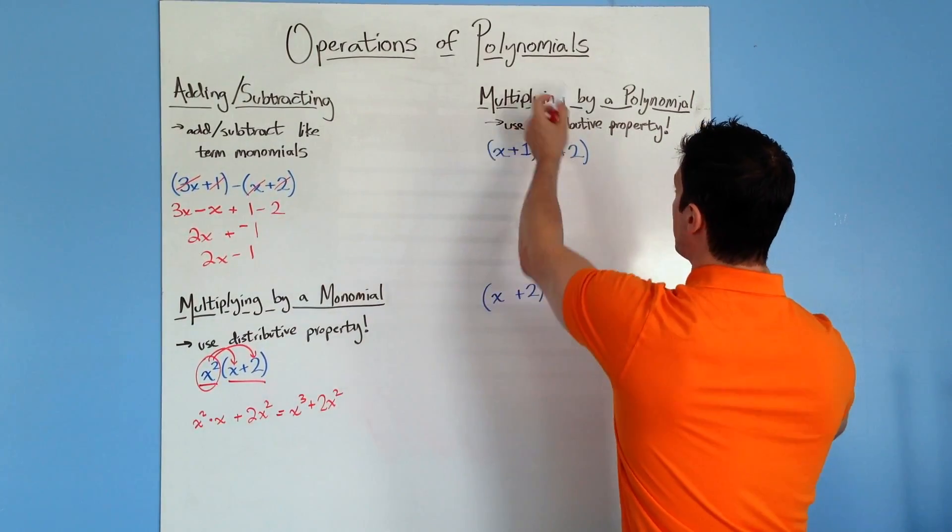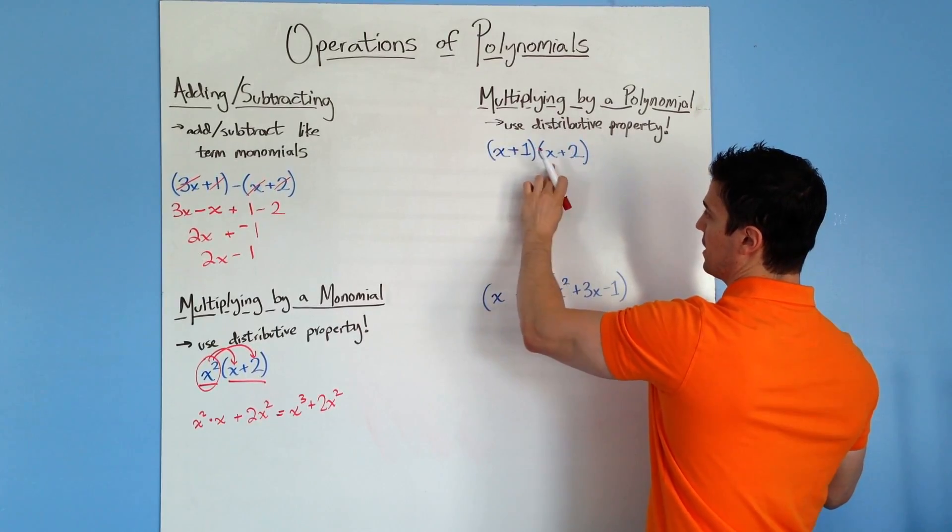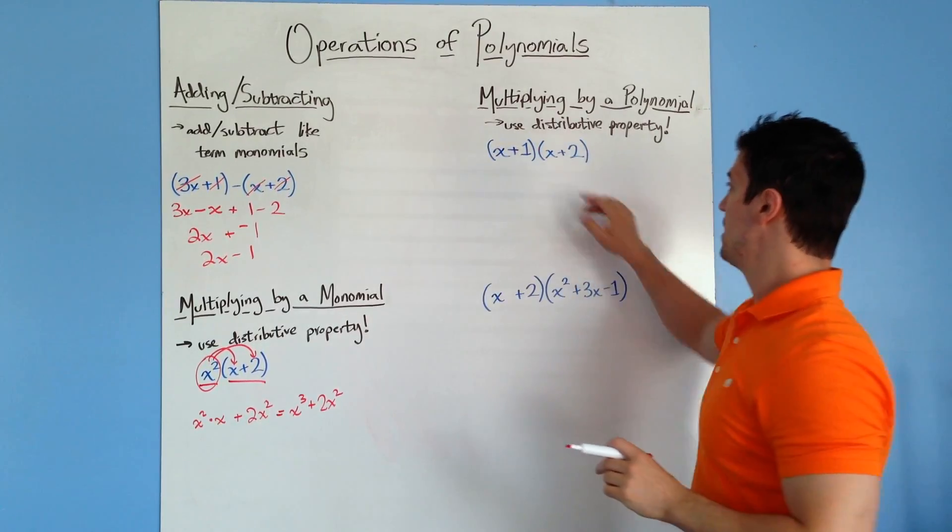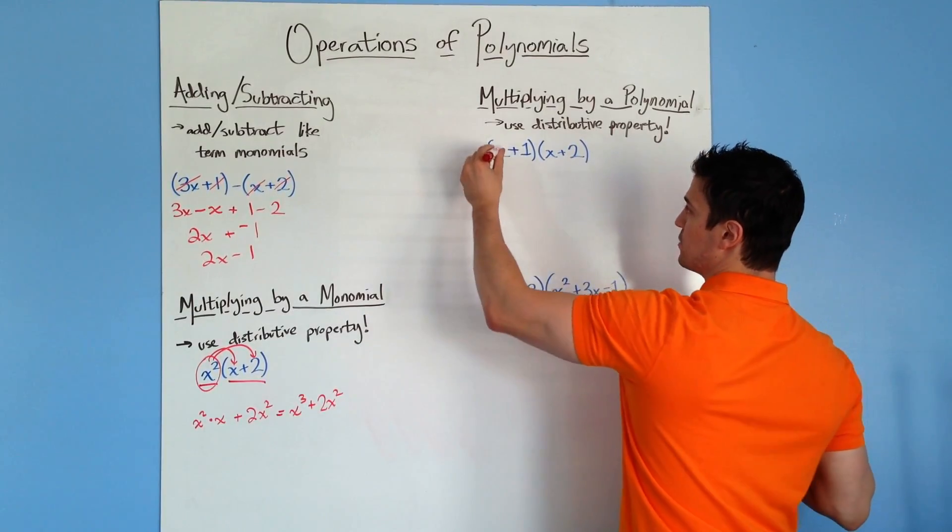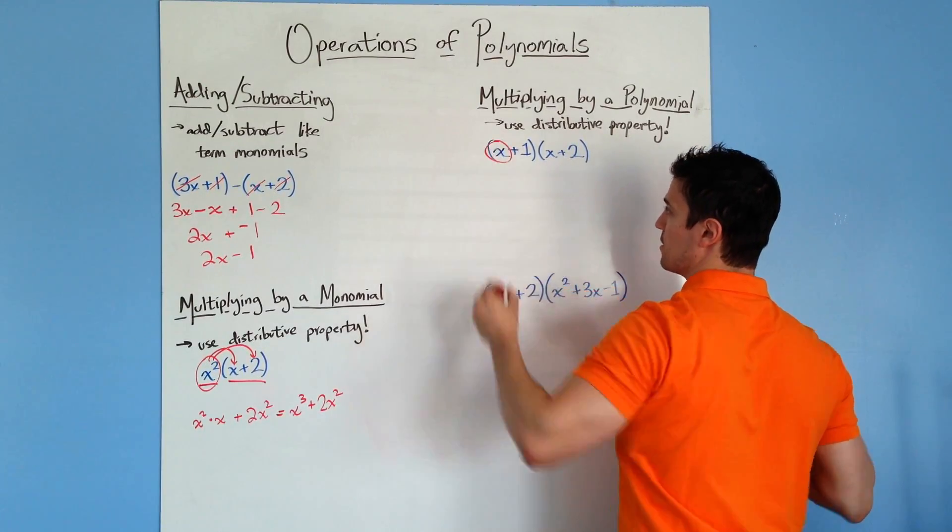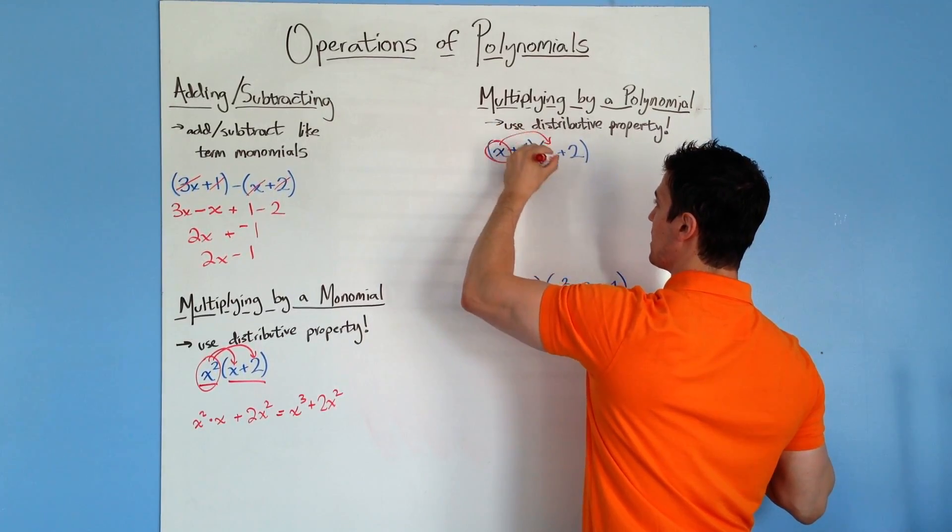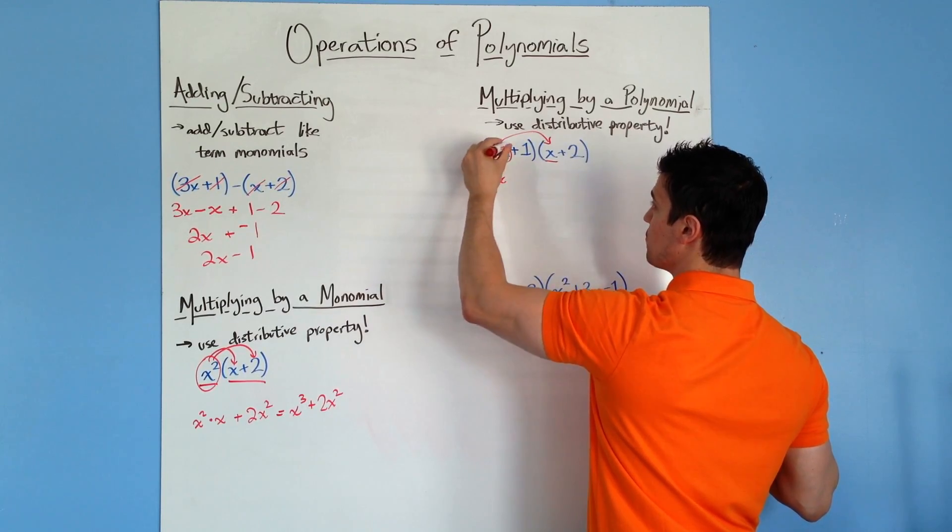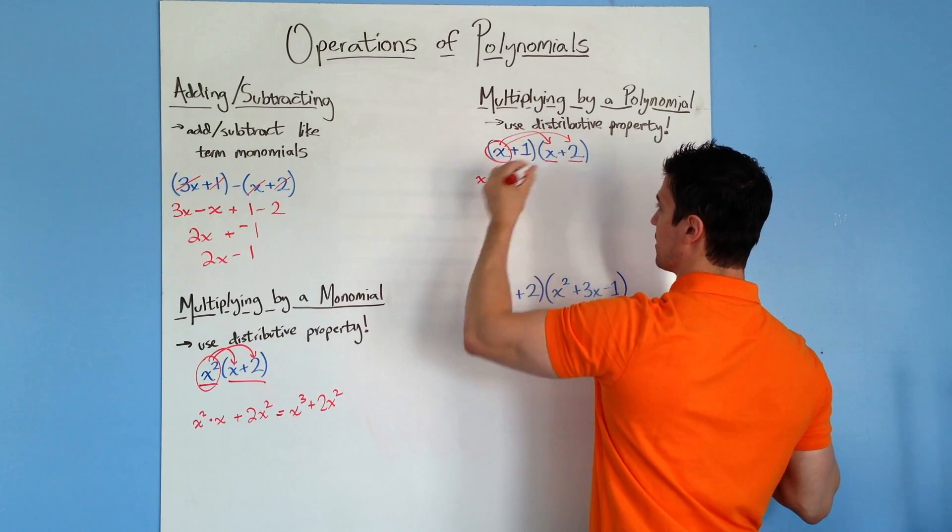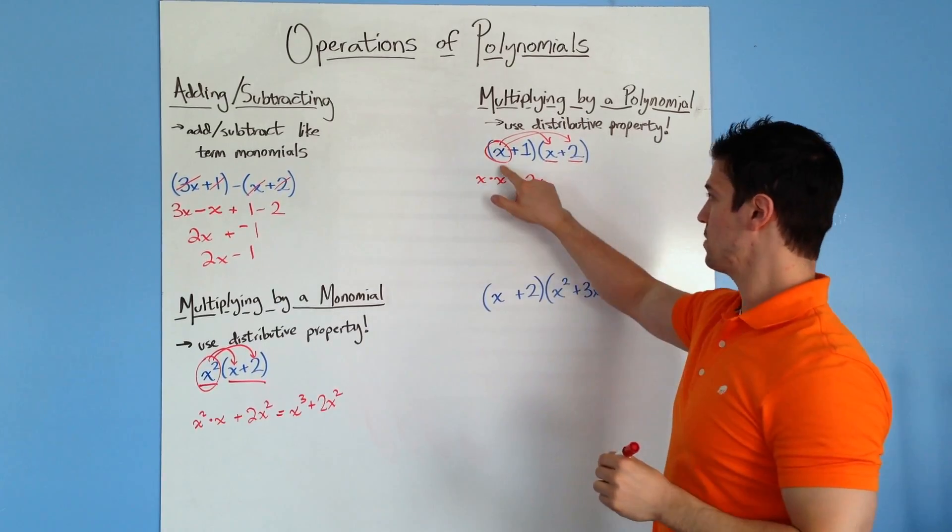Next one, we have multiplying a polynomial by a polynomial. So we have a polynomial here and here. They're both binomials. Again, you would use a distributive property, but you have to go through an extra step. So I'm going to take each one of these terms by itself first. So I have this x and I'm going to multiply it by this first x. And so I'll have x times x. Then I'm going to multiply it by this 2 over here, and you're going to get plus 2x. So that's the first one.